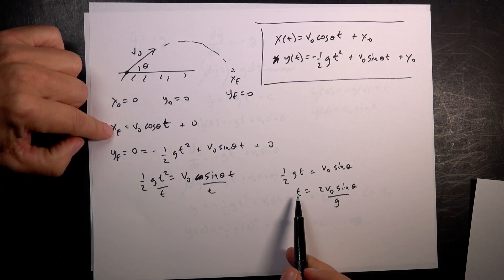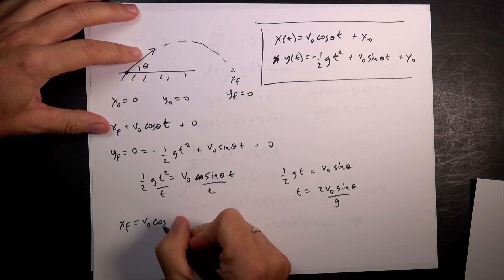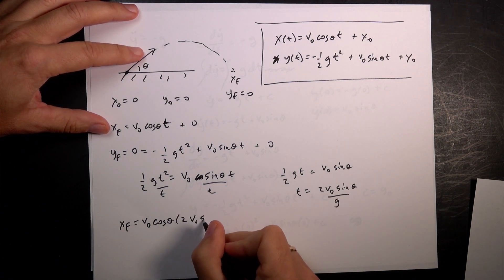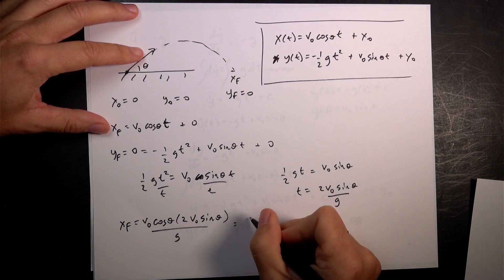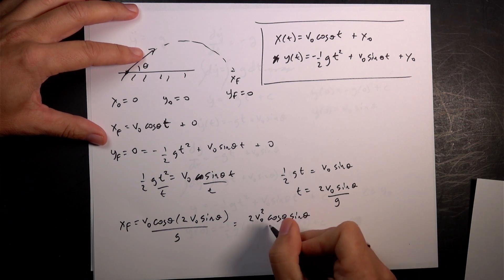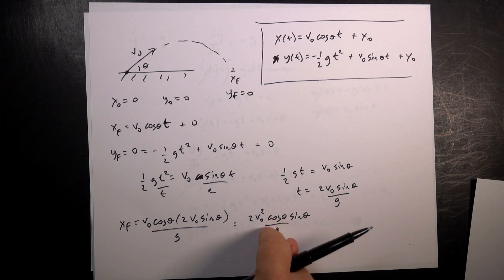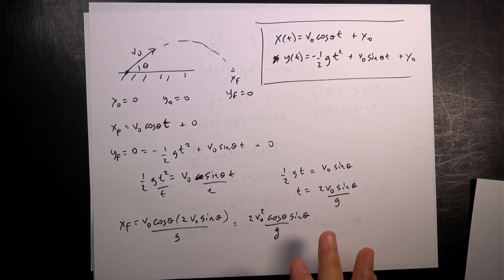Now I can use that time and say x final equals v zero cosine theta times 2 v zero sine theta over g. You'll notice I have a 2 and v zero squared, with cosine theta times sine theta, all over g. That's how far it goes — you'll see this as the range equation, but be very careful: this is only the range equation if it's launched from and lands on level ground.